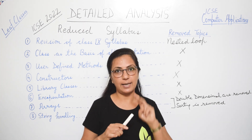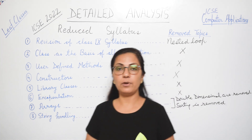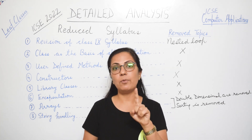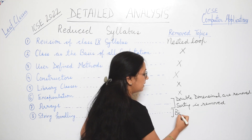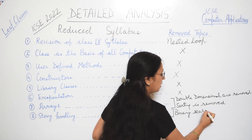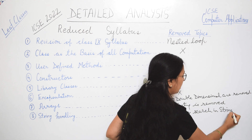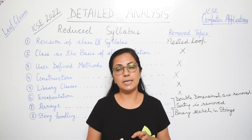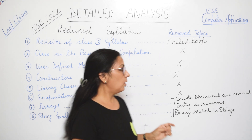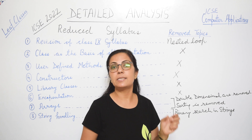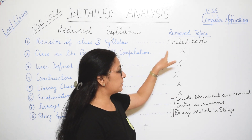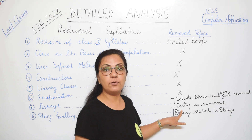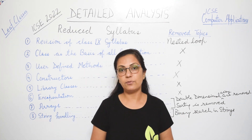The last topic in the syllabus is Strings. The entire string topic is present with only one removal: binary search in strings is removed. Sorting was not there earlier and is still not there. Linear search is present in strings. So to summarize, the main sub-topics removed from your syllabus are: nested loops, double dimensional arrays, sorting from arrays, and binary search from strings.